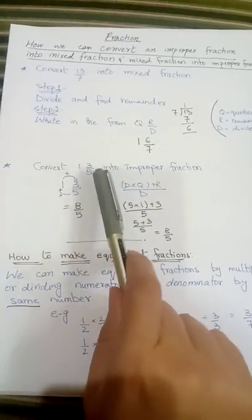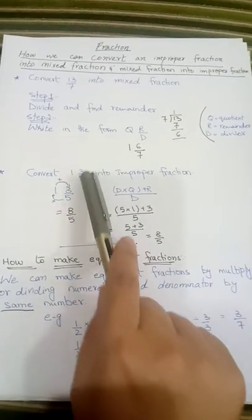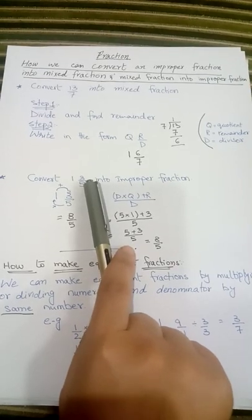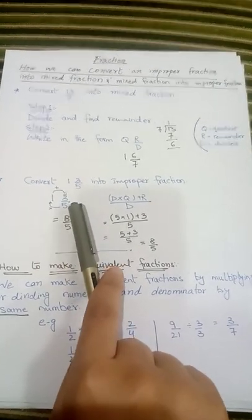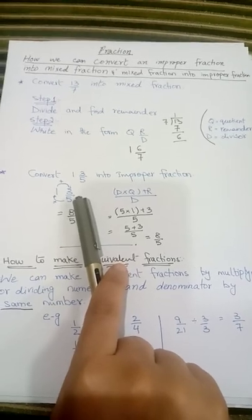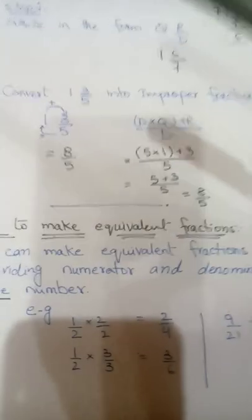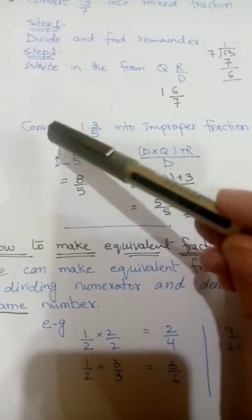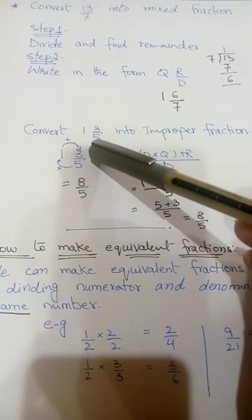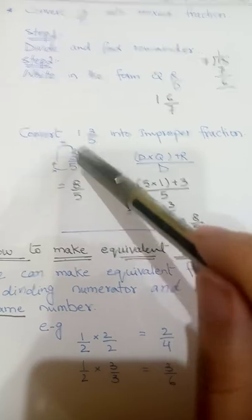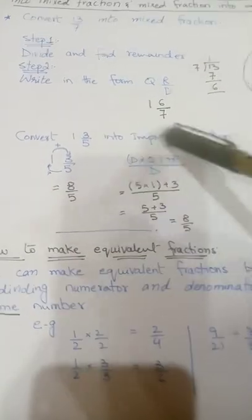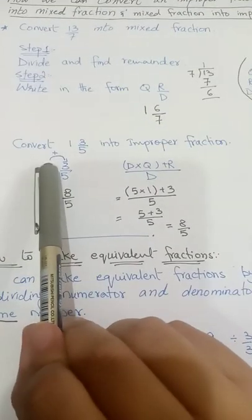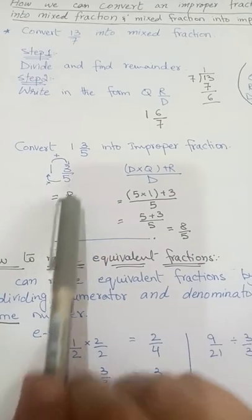Now we need to convert a mixed fraction into an improper fraction. This is a mixed fraction because it's a whole part followed by a proper fraction. So 1 whole 3 upon 5 — we have to convert this into an improper fraction. We can do this directly: 5 multiplied by 1 is 5, plus 3 is 8. So the answer is 8 upon 5.